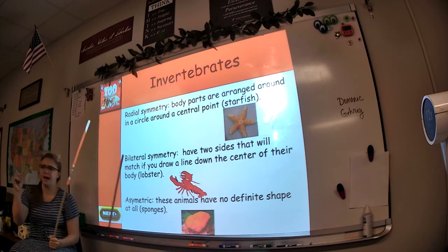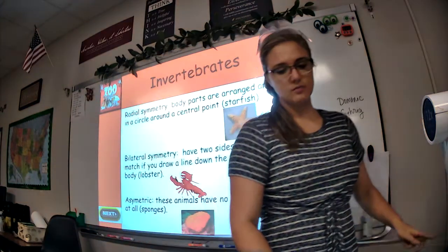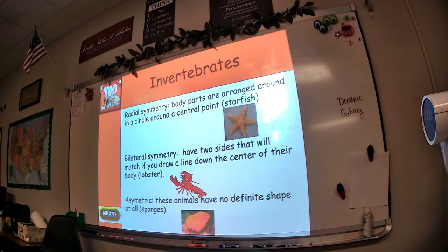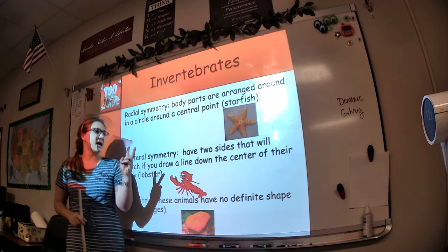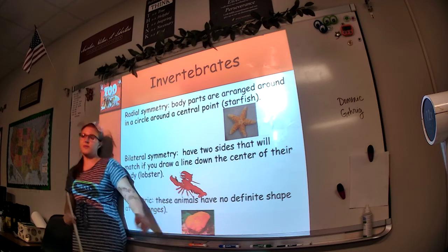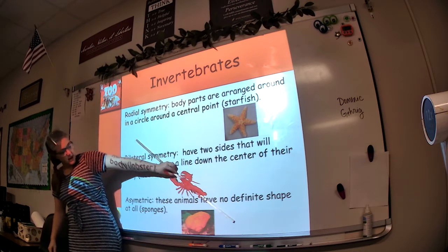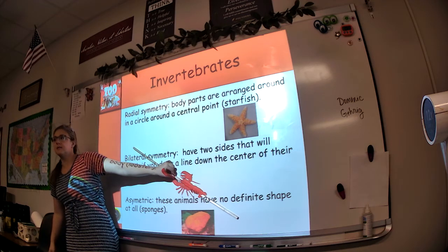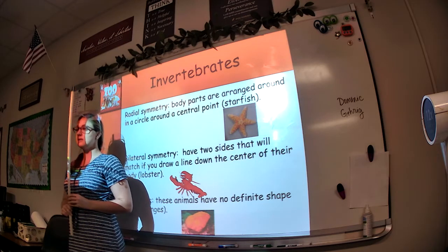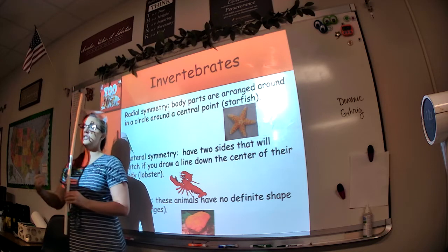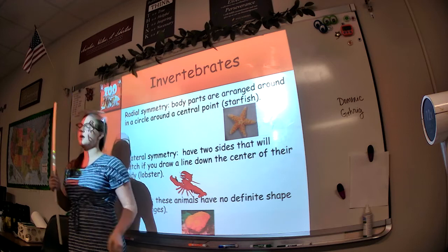Next, we have bilateral symmetry. What does the prefix bi- mean? Same thing as in binomial — two. So, bilateral symmetry is when an organism has two sides that match up if you draw a line down the center of their body. If I chop this lobster in half like this, it will match on both sides. Same thing as a human — if I draw a line down the center of my body, I have bilateral symmetry. I have an arm on each side, a leg on each side, an eyeball on each side, an ear on each side, et cetera.